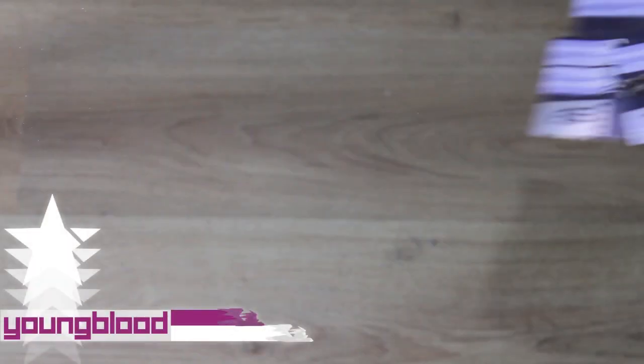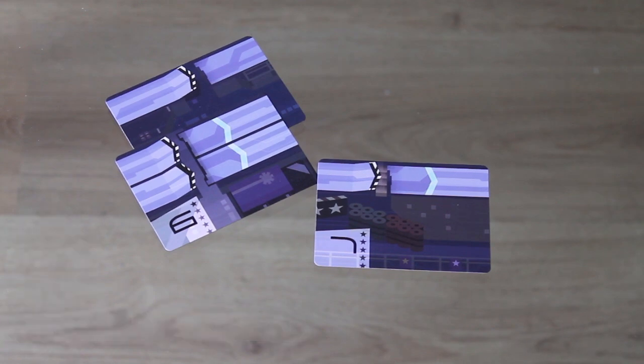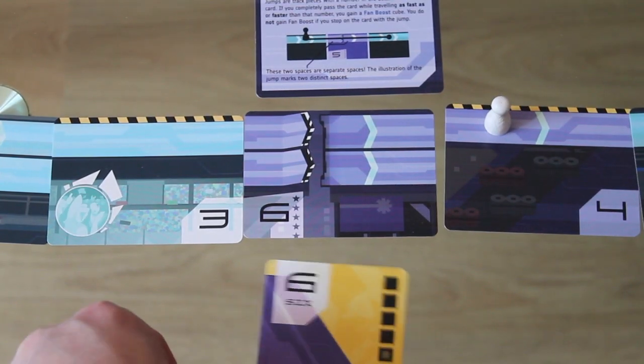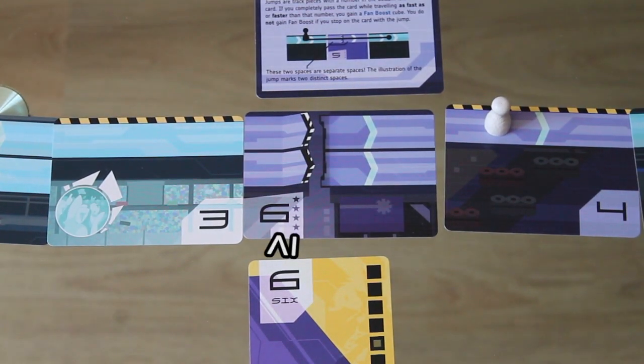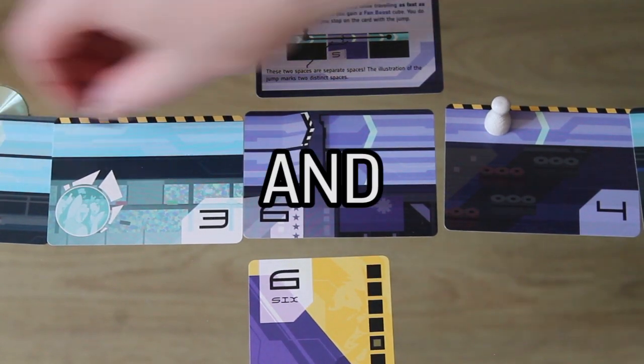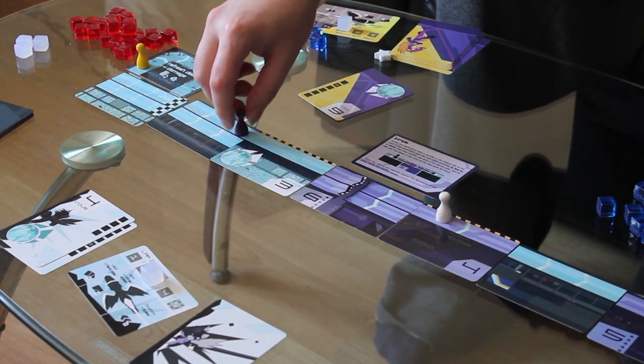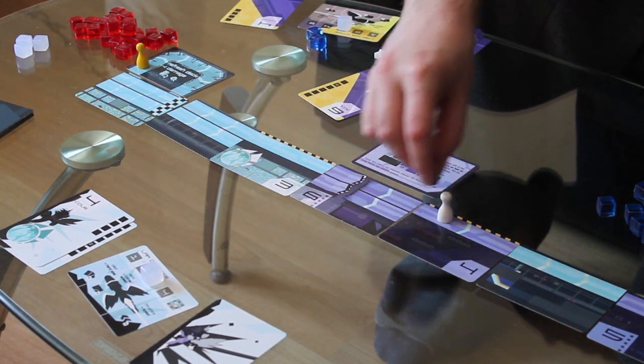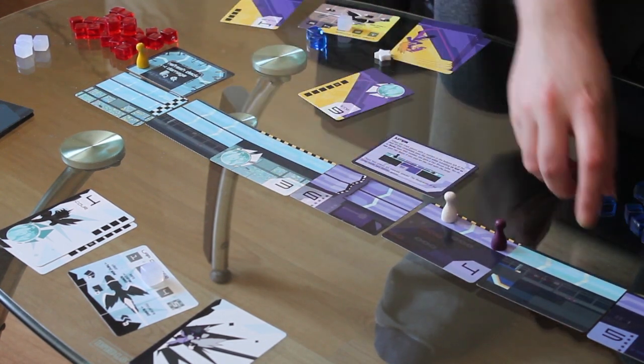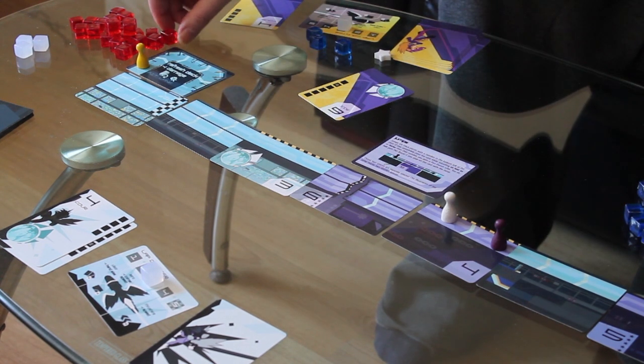The Youngblood expansion adds stunt jumps to the game. These are an extra way to get fan boost. They work like inverse corners. If you're traveling at or above the speed listed on the card and you clear it, you get a fan boost for your sick moves. Can this result in a track configuration where you have a jump you literally cannot use without taking damage? Yes. Up to you if you want to take that risk. Sometimes it's worth it.